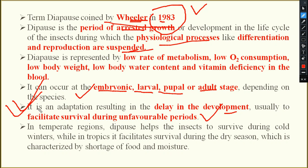Diapause is an adaptation — that means the insect will adapt and try to avoid unfavorable conditions. For example, if an insect is unable to survive in winter, it will undergo diapause so that all activity stops. Once winter passes, the insect can regain composure and continue its life cycle. This is the meaning of adaptation resulting in delay of development to facilitate survival during unfavorable periods.